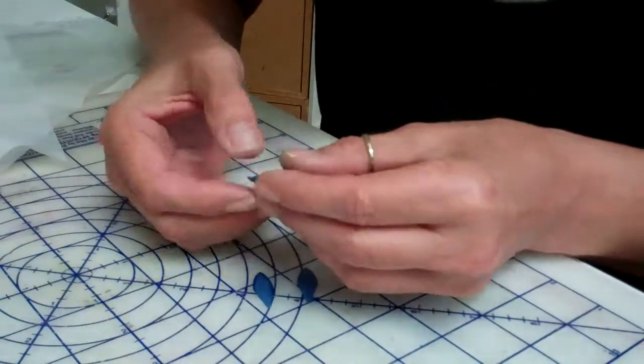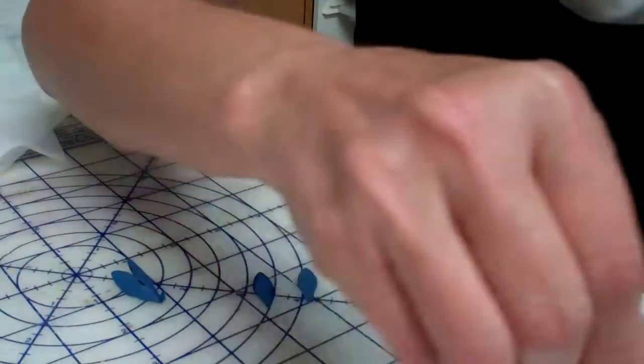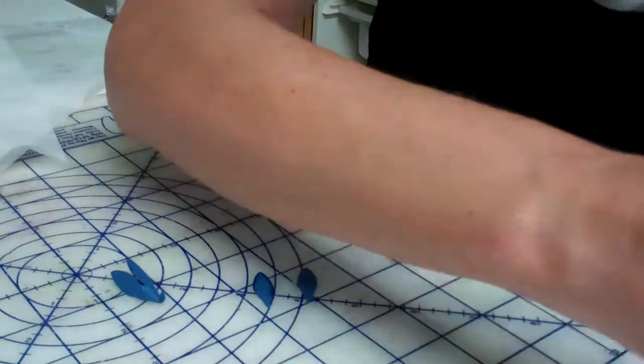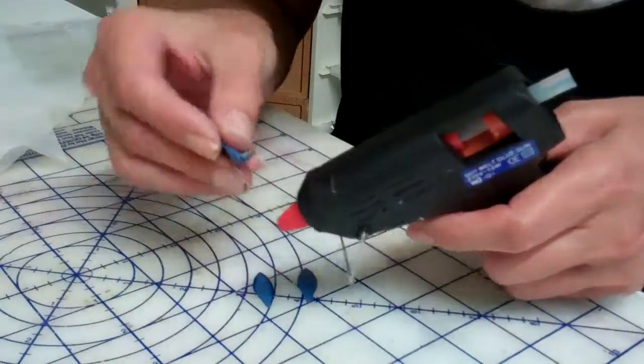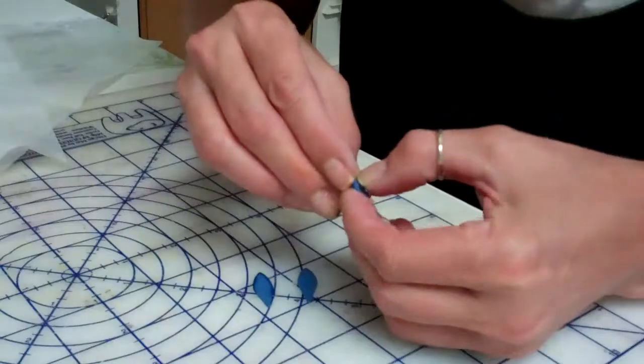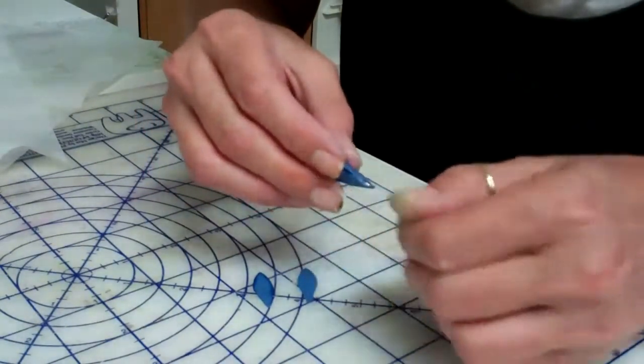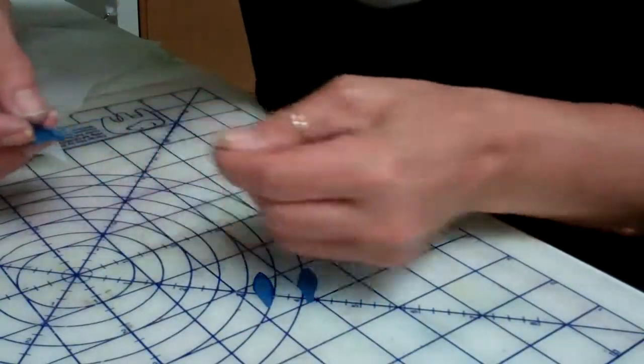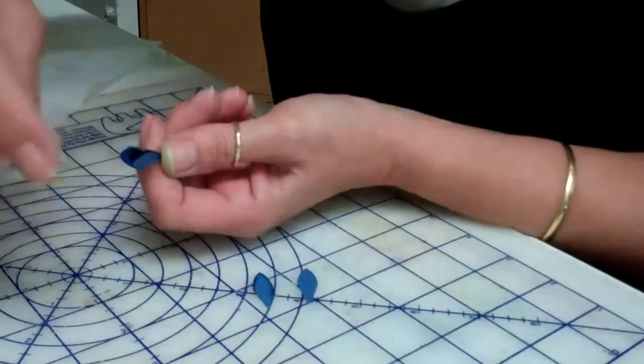So let me just put a little glue on that. Okay, and that's what you have when you're finished with the glue, you have just this cone shaped part.